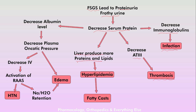As a reaction to decreased serum protein, the liver produces more proteins and lipids to replace the lost ones, leading to hyperlipidemia and fatty casts. A major protein lost is albumin, which along with other proteins forms oncotic pressure. When albumin is lost in urine, oncotic pressure decreases. Hydrostatic pressure is produced by the heart pumping blood, while oncotic pressure — formed by proteins — keeps blood inside the circulation.